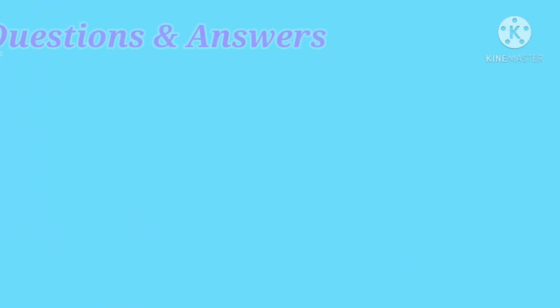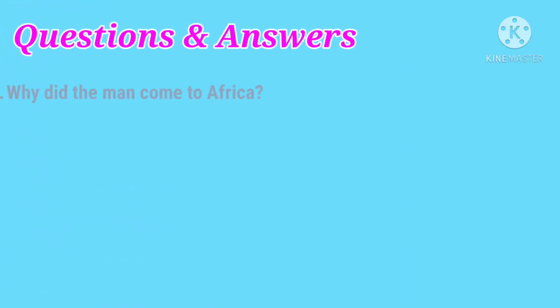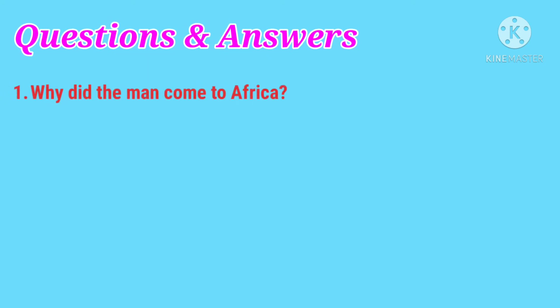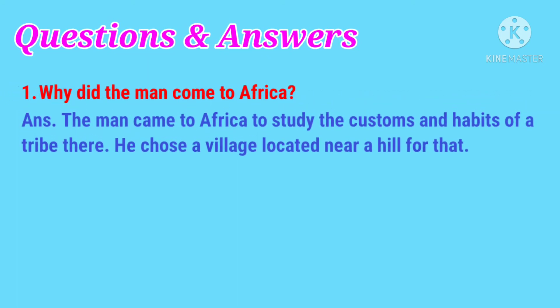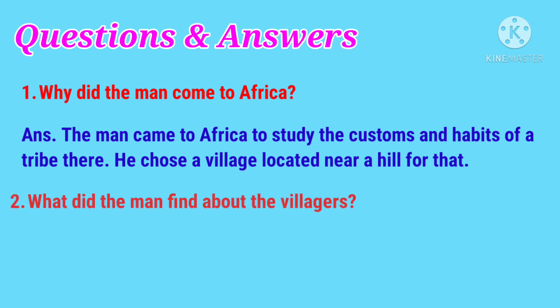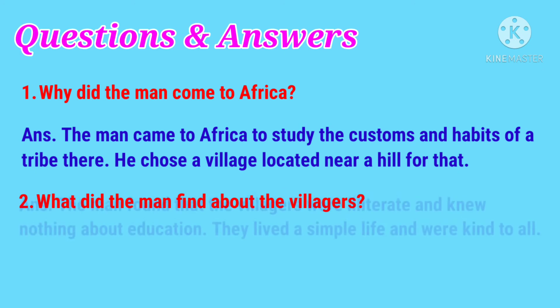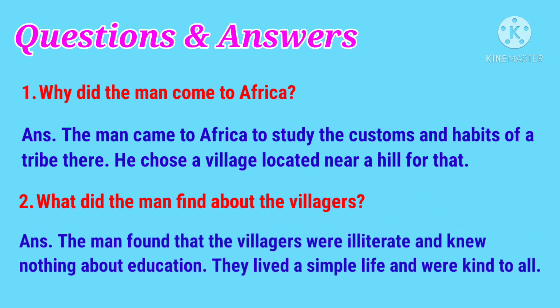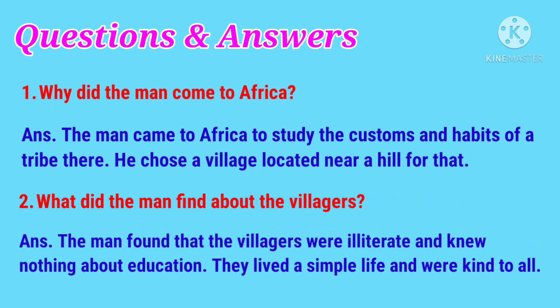Now we'll do five two-mark question answers. Question one: why did the man come to Africa? The man came to Africa to study the customs and habits of a tribe there; he chose a village located near a hill. Question two: what did the man find about the villagers? The man found that the villagers were illiterate and knew nothing about education.